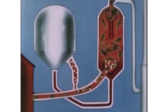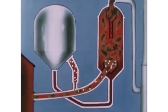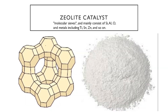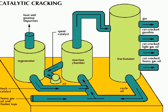The large hydrocarbon molecules are heated at high temperature and passed over a catalyst. This catalyst is called zeolite. This is a 3D structure of zeolite catalyst, also called molecular sieve. It consists of silicon and aluminum oxides, which are also mixed with some metals such as titanium, tin, zinc, and other metals. The larger hydrocarbons are passed over the zeolite, where the cracking will take place.